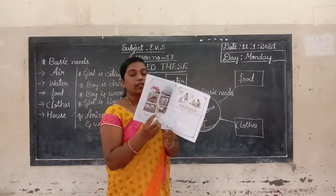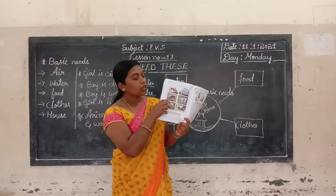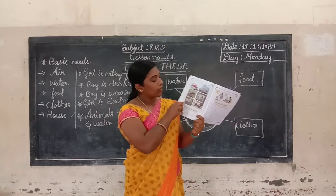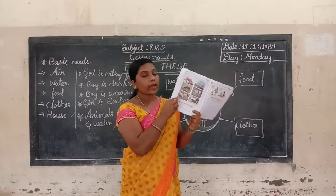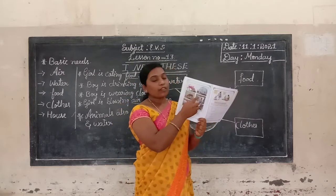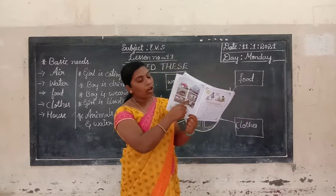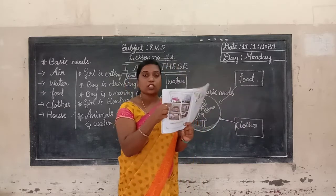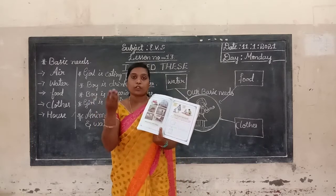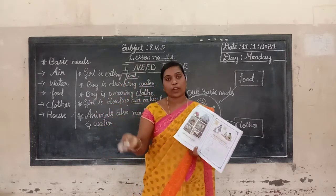In this picture, cow eats grass. Buffalo also eats grass. Sheep also eats grass. Elephant eats some food. Horse is also drinking water — horse also needs water to drink. Dog also eats food to live.